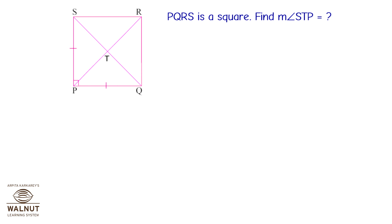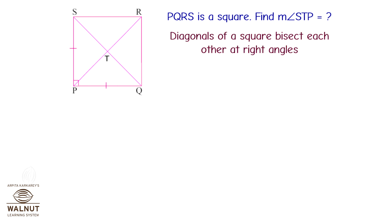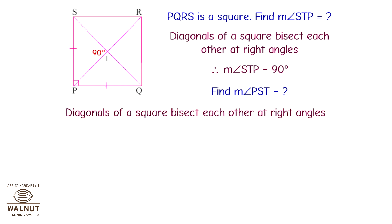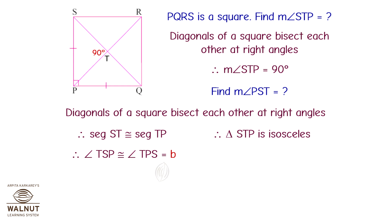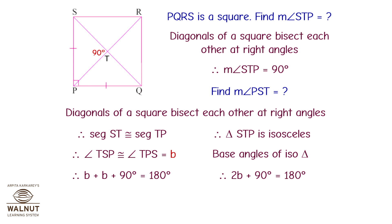PQRS is a square. Find measure of angle STP. Diagonals of a square bisect each other at right angles, so angle STP = 90°. Find measure of angle PST. Since diagonals bisect at right angles, segment ST is congruent to segment TP, so triangle STP is isosceles. Let the base angles be B: B + B + 90° = 180°, so 2B = 90°, giving B = 45°. Therefore angle PST = 45°.